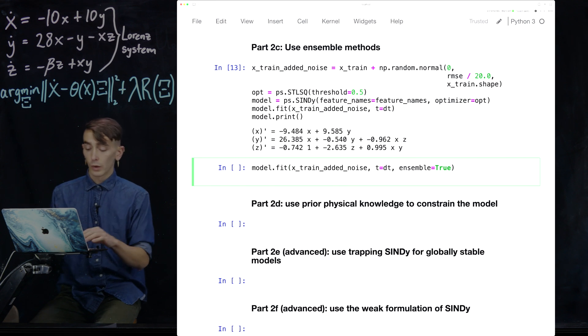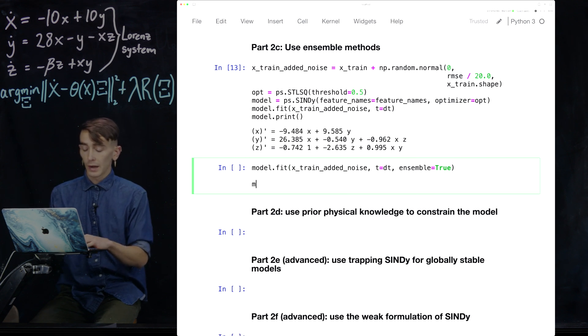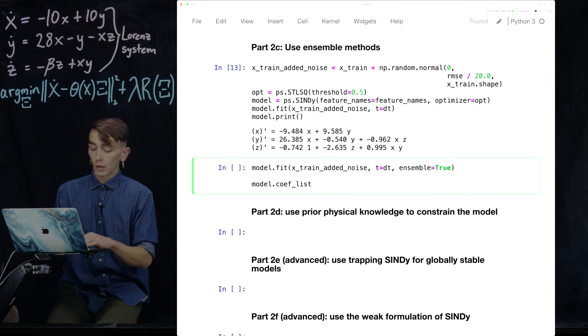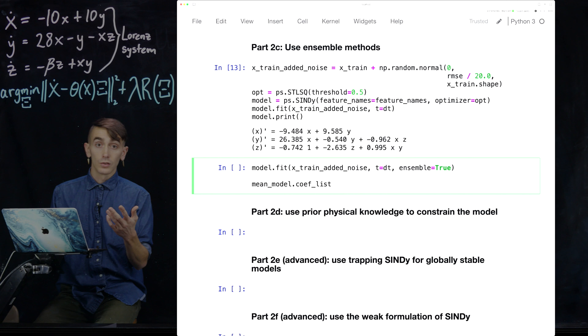So that'll generate 20 models. And then those come back in this model.coefficient list. And so what we're going to do is take the mean and the standard deviation of those 20 models, and then plot them to see what kind of results we're getting with these methods.